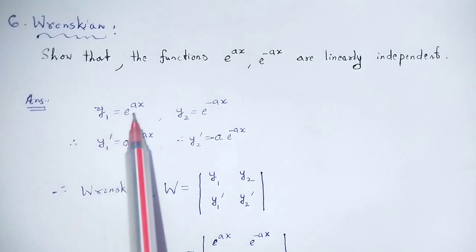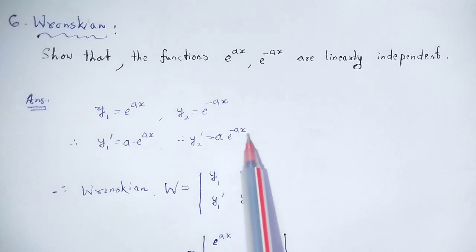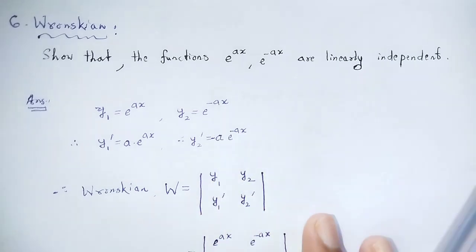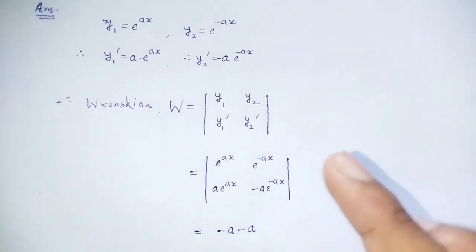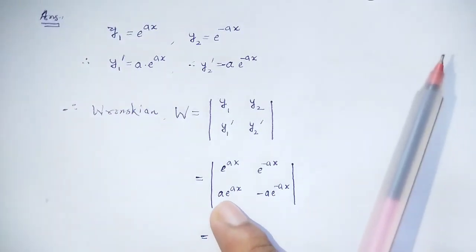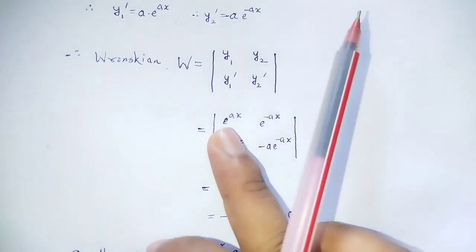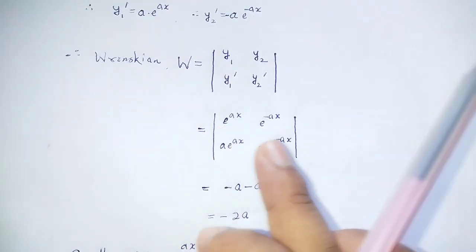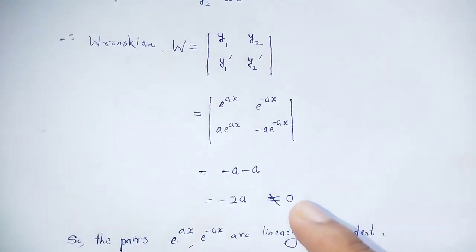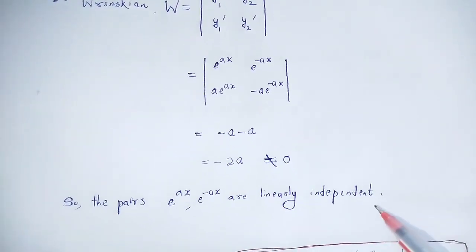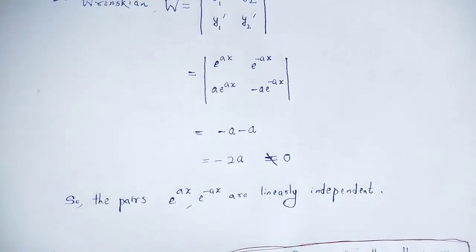Taking the first derivatives: y1' = e^x and y2' = -e^(-x). The Wronskian W is the determinant: W = |y1, y2; y1', y2'| = e^x · (-e^(-x)) - e^(-x) · e^x = -1 - 1 = -2. Since W ≠ 0, the functions are linearly independent.